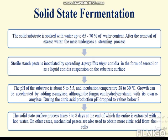Growth can be accelerated by adding alpha-amylase, although the fungus can hydrolyze starch with its own alpha-amylase. During citric acid production, pH drops to values below 2. The solid state surface process takes around 5 to 8 days, at the end of which the substrate is extracted with hot water. In other cases, mechanical presses are also used to obtain more citric acid from the cells.